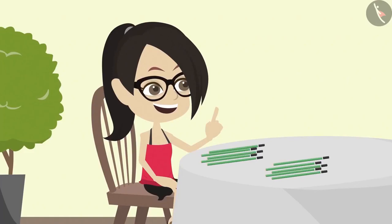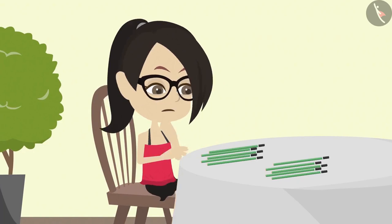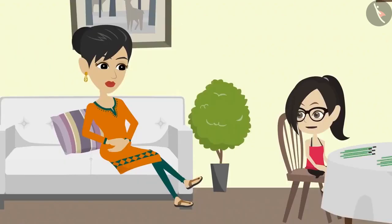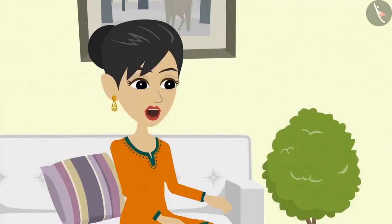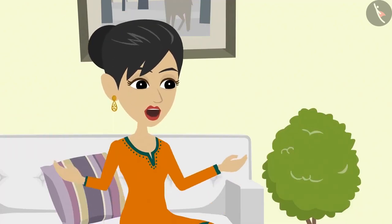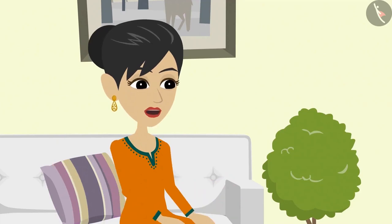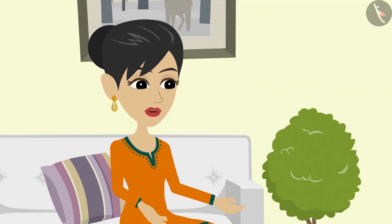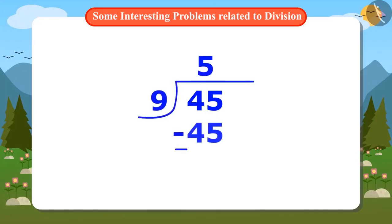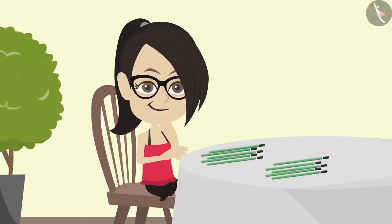Vandana has understood that she can divide and distribute things. But she still does not understand one thing. Mummy, when you can equally distribute the pencils one by one, then what is the need to divide it? For that, I will ask you a question. If you have forty-five pencils and you are asked to divide them into nine parts, which method will be easier: distributing the pencils one by one, or dividing forty-five by nine?